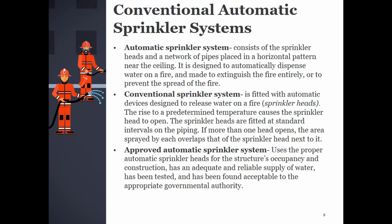Conventional automatic sprinkler systems consist of sprinkler heads and a network of pipes placed in a horizontal pattern near the ceiling. They are designed to automatically dispense water on a fire to extinguish it entirely or prevent its spread. The rise to a predetermined temperature causes the sprinkler head to open. Sprinkler heads are fitted at standard intervals on the piping; if more than one head opens, the area sprayed by each overlaps that of the adjacent sprinkler head. An approved automatic sprinkler system uses the proper heads for the structure's occupancy and construction, has an adequate and reliable water supply, has been tested, and is acceptable to the appropriate governmental authority.